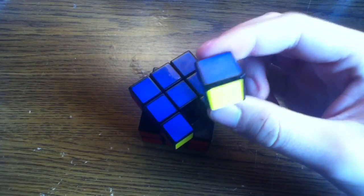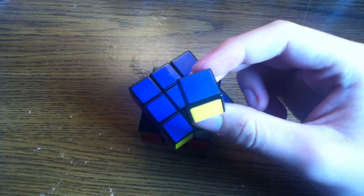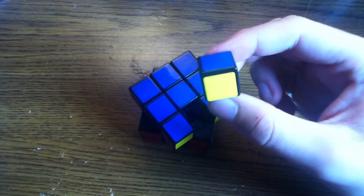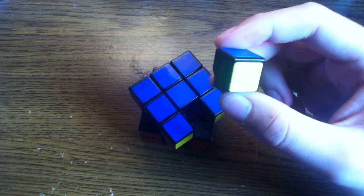This is an edge piece. An edge piece has two colors on it. This one has blue and yellow. All the edge pieces are different and there's 12 edge pieces on a Rubik's Cube.